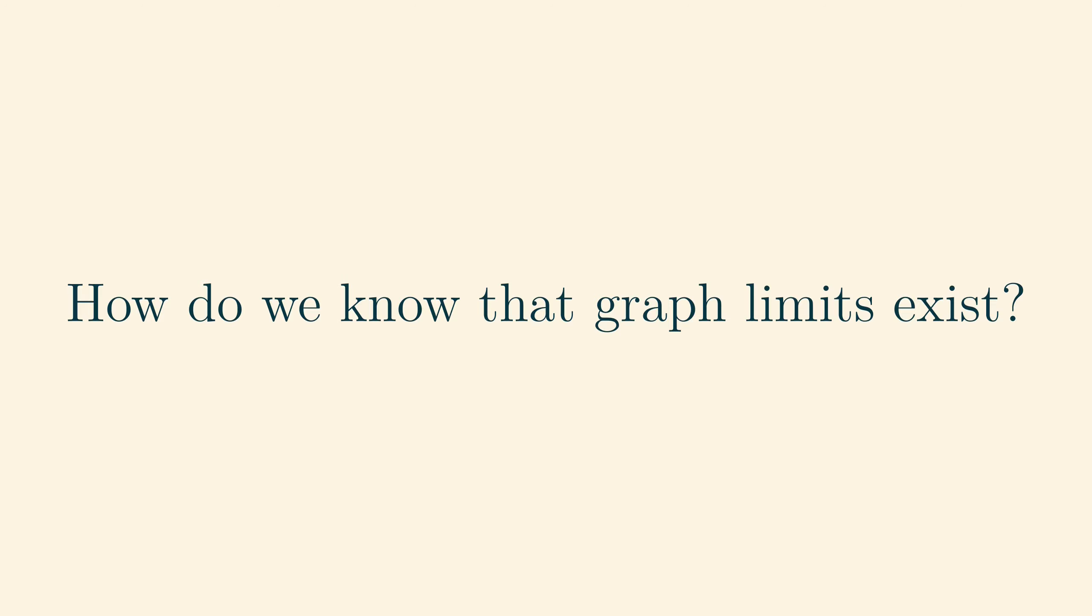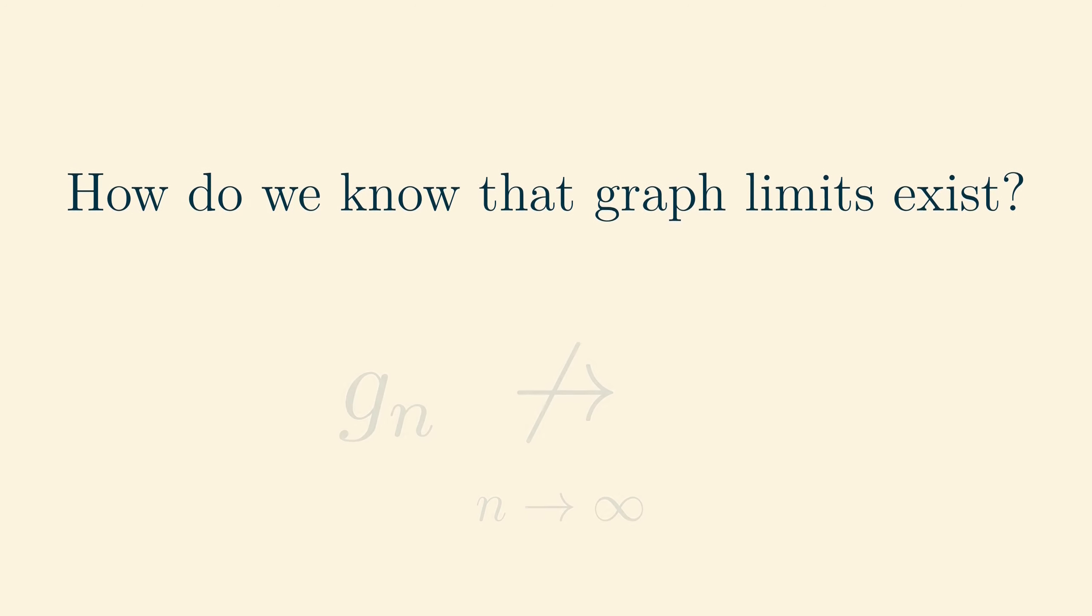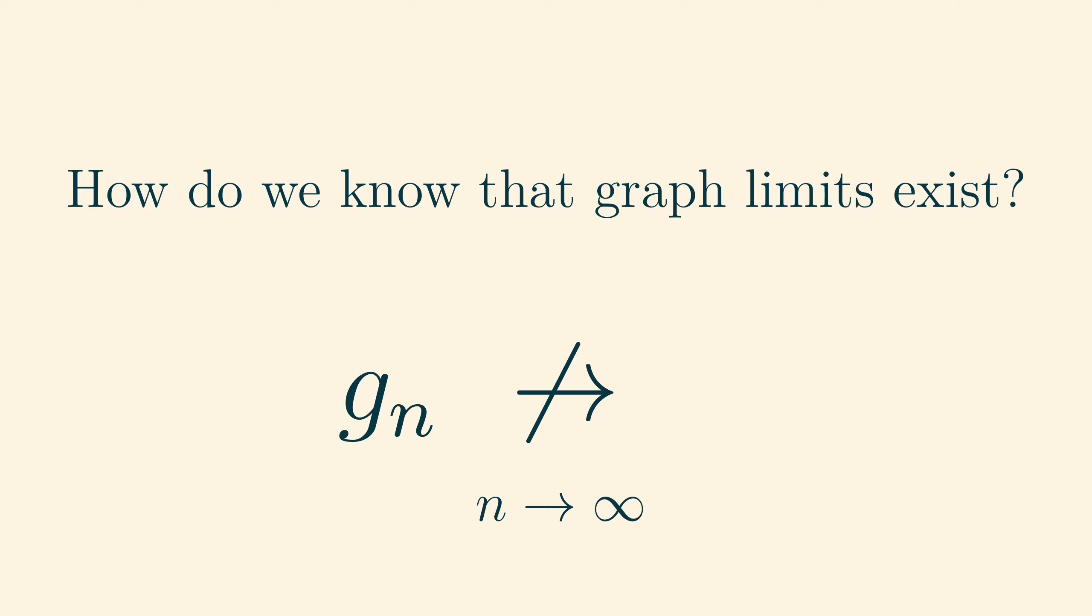But how do we even know that there is a limit for that last sequence of graphs? Surely there are some sequences which don't converge at all, right? Well, yes, there are, but actually every sequence of graphs with uniformly bounded maximum degree at least has a subsequence which converges in the sense which we have described. To prove this, we will need to invoke some powerful tools from probability theory.